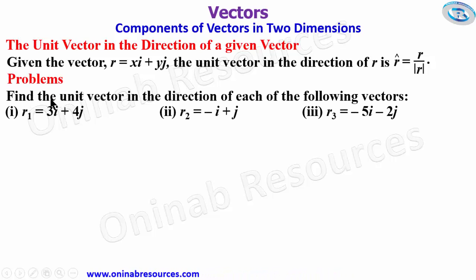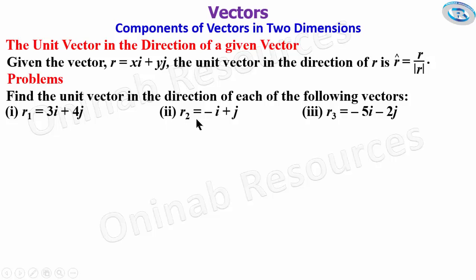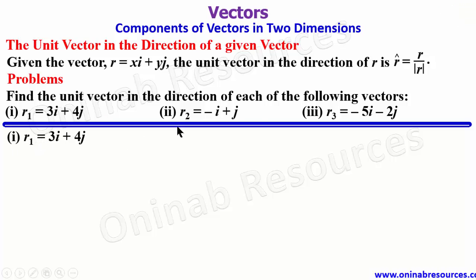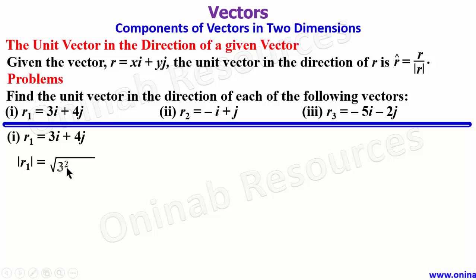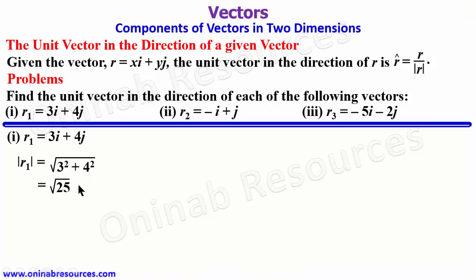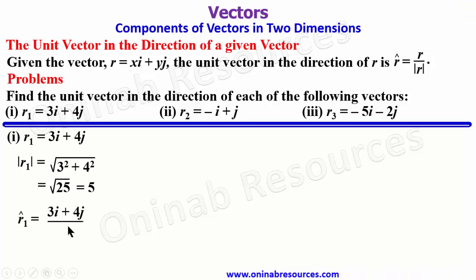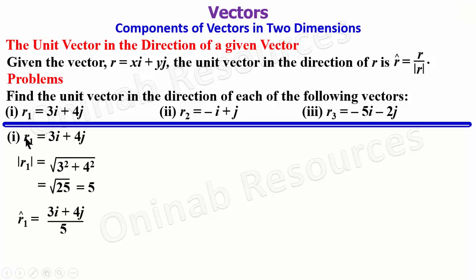Find the unit vector in the direction of each of the following vectors: r1, r2, and r3. We start the solution from r1. First we find the modulus of r1: √(3² + 4²) = √(9 + 16) = √25 = 5. The unit vector in the direction of r1 is r̂1 = (3i + 4j) / 5.